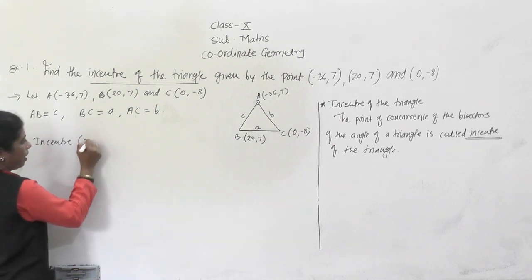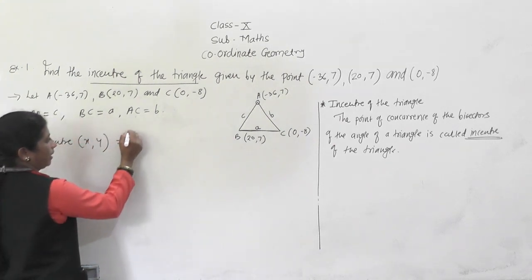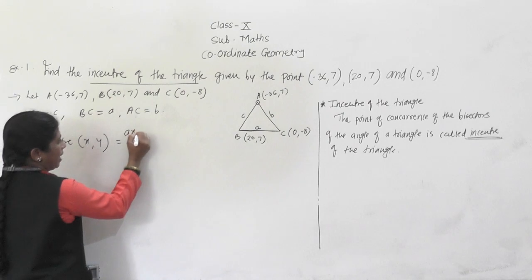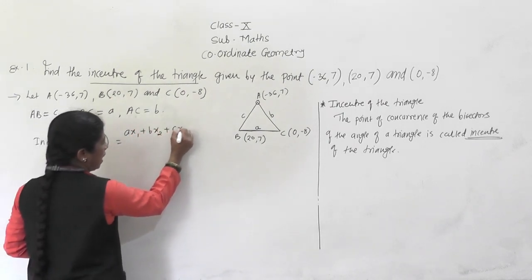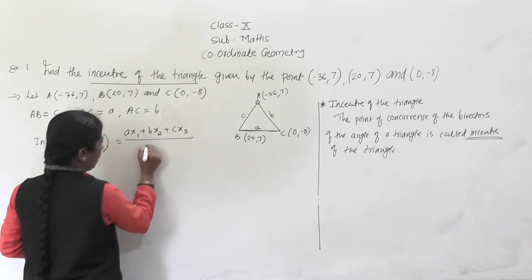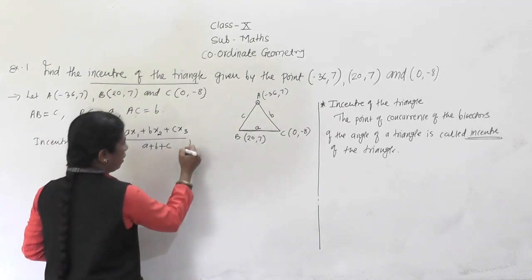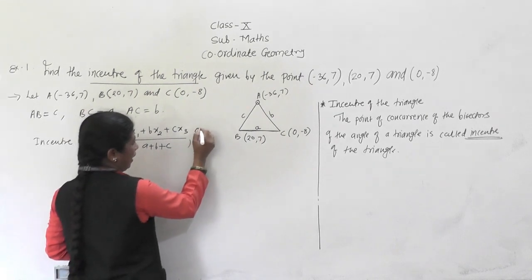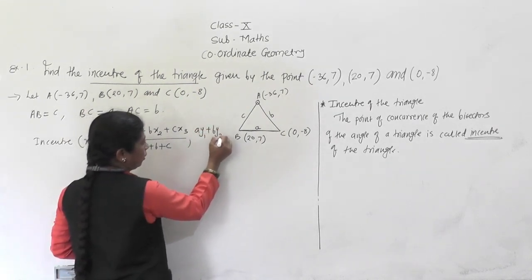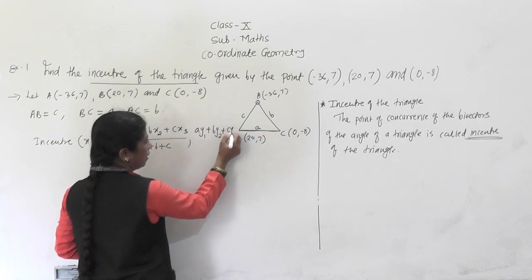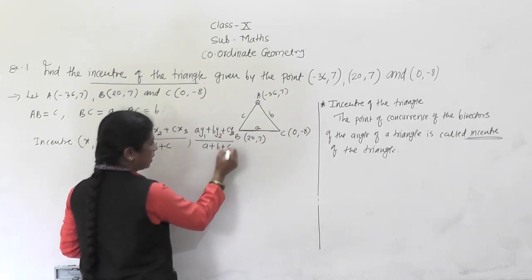The incenter coordinates (x, y) are given by the formula: x = (a·x1 + b·x2 + c·x3) / (a + b + c) and y = (a·y1 + b·y2 + c·y3) / (a + b + c).